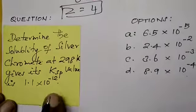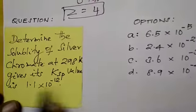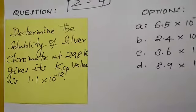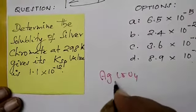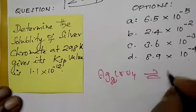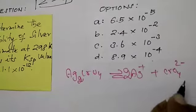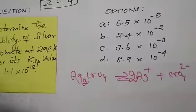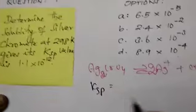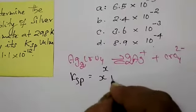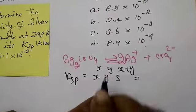Now the next question: determine the solubility of silver chromate at 298 Kelvin, given the solubility product value. First, write the formula: Ag₂CrO₄ ionizes to give 2 Ag⁺ plus CrO₄²⁻. The tricky formula from the NCERT table is: Ksp = X^X × Y^Y × S^(X+Y).